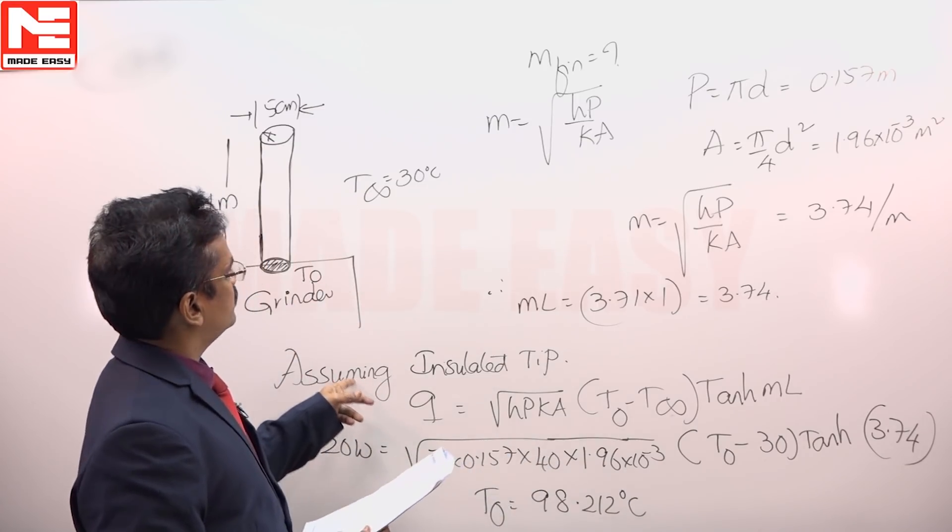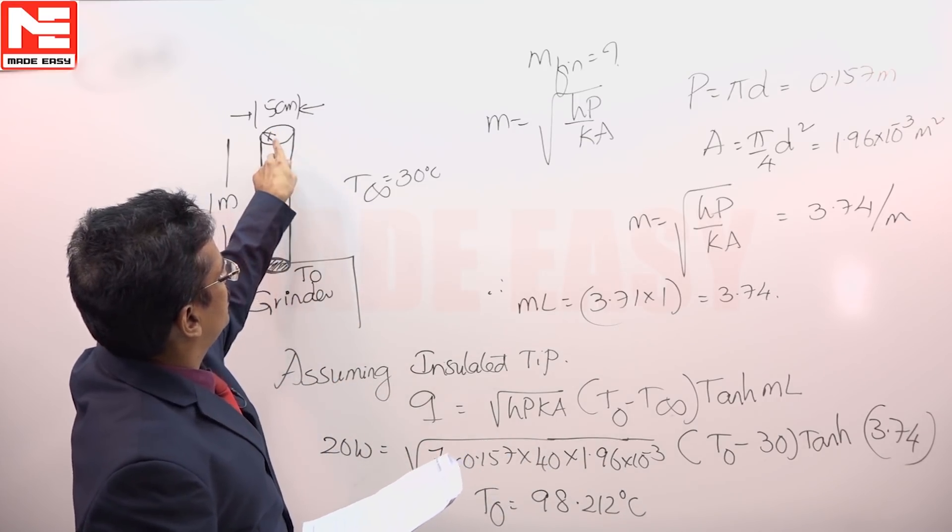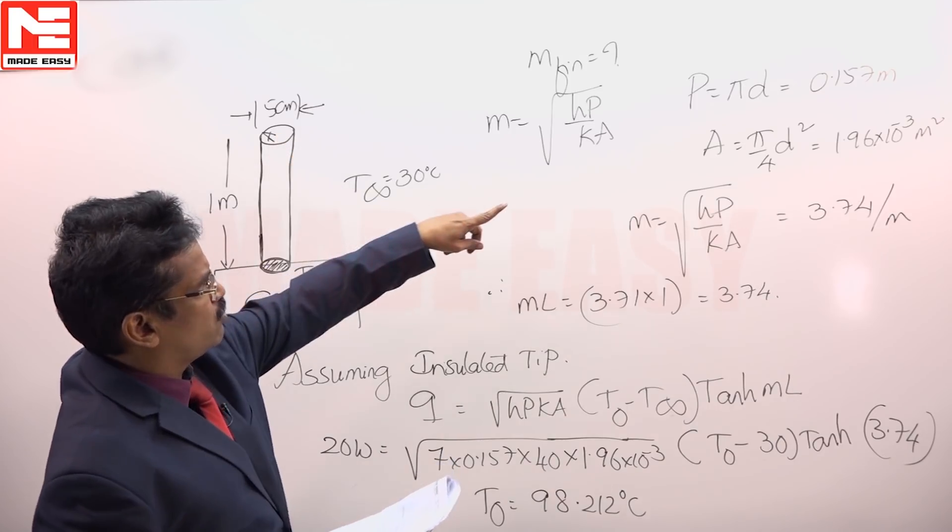We have assumed that insulated tip case, that is a very commonly considered case. Here A is the profile area which is taken as π/4 D².